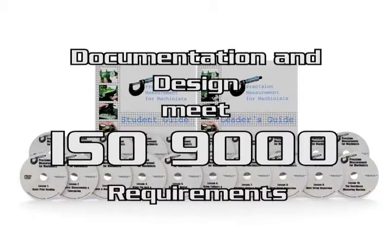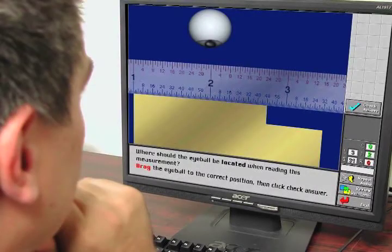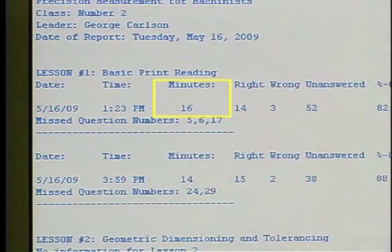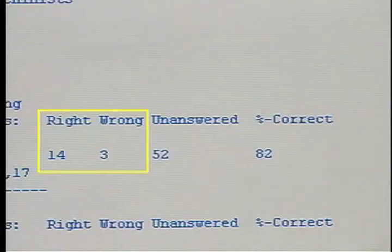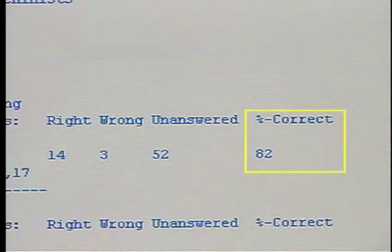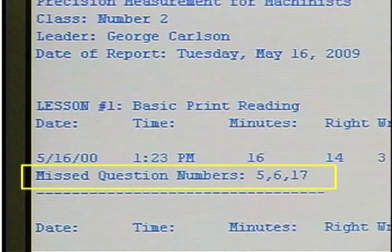Each time an individual completes an attempt at a test, their personal file is updated. The data collected for each attempt includes the date, the number of minutes spent on the test, the number of correct and incorrect answers, the number of questions the individual has not yet answered, the current percentage grade, and a list of the question numbers which were answered incorrectly.